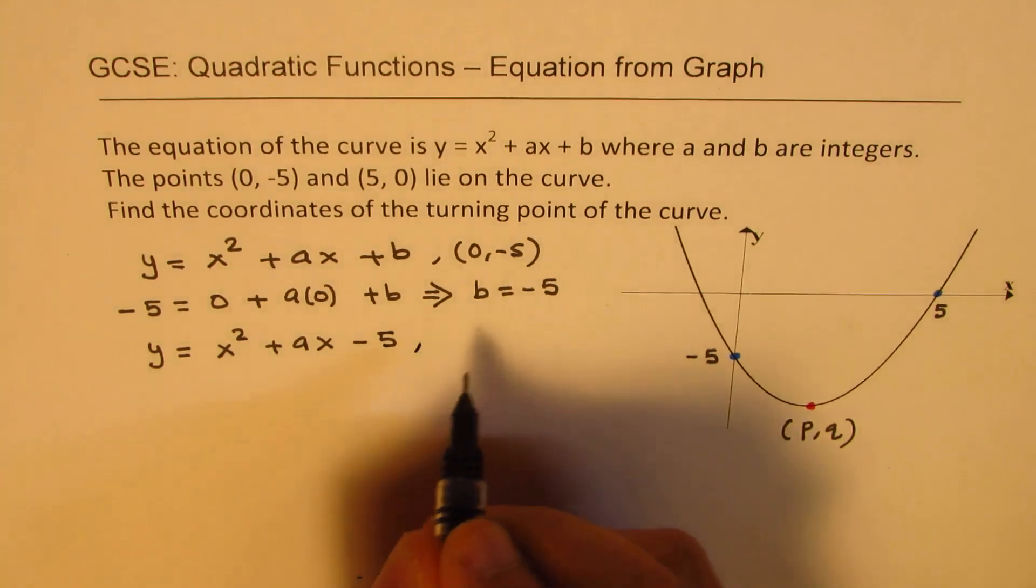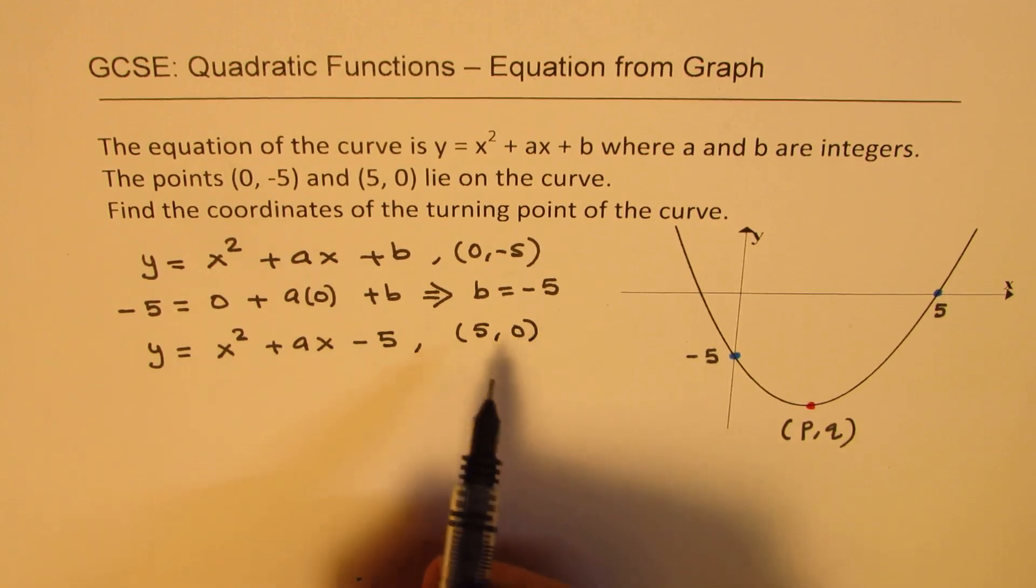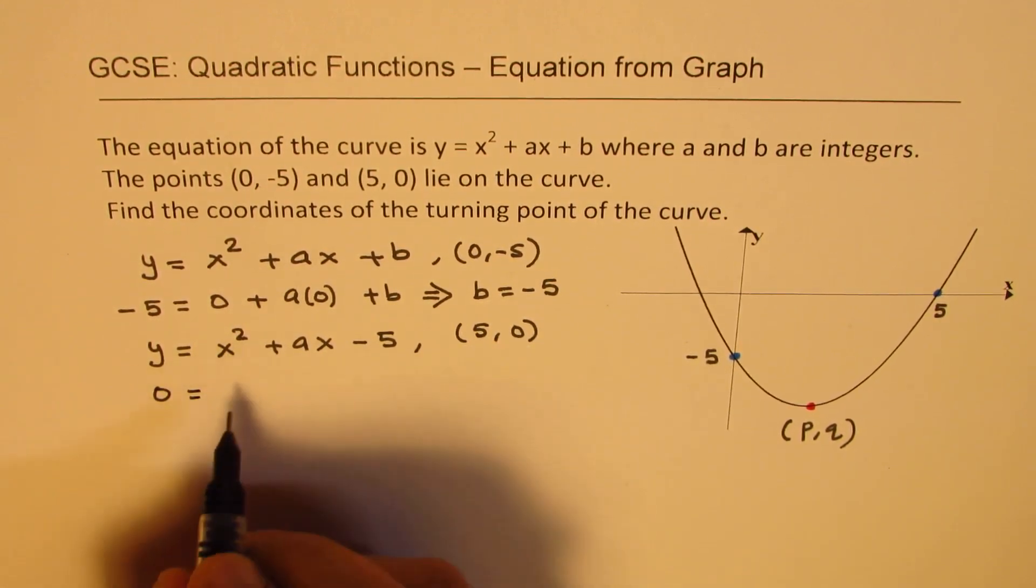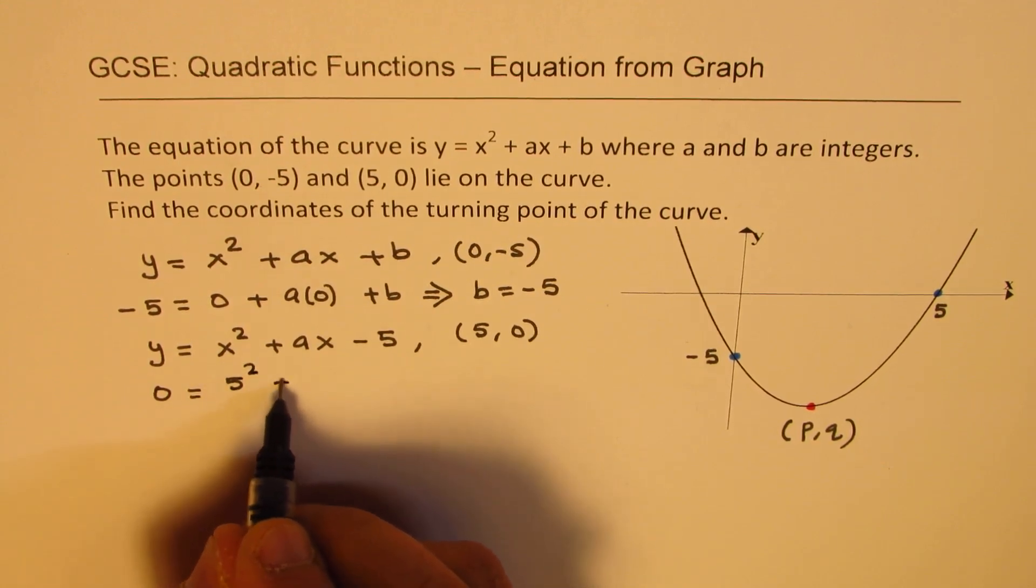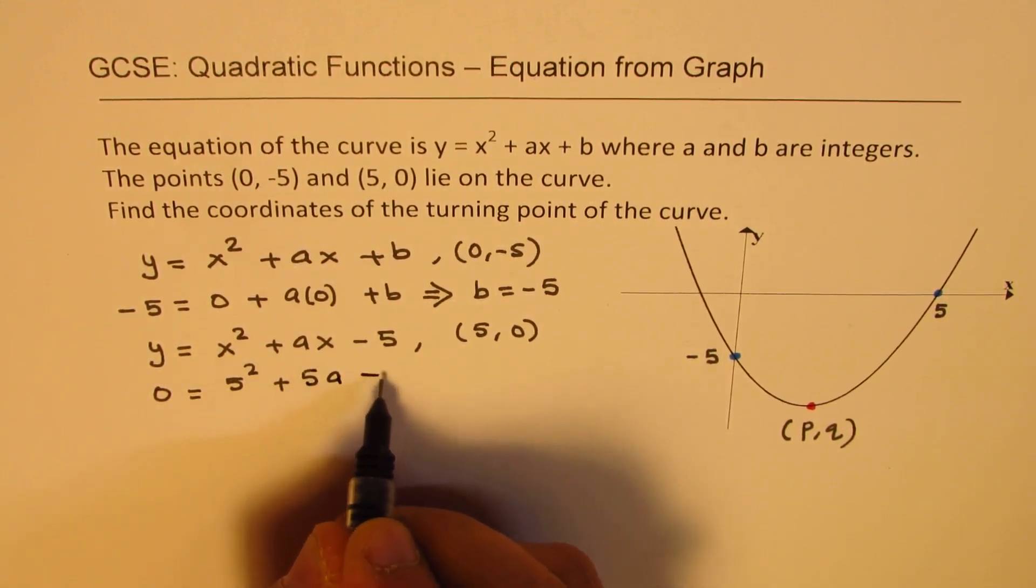Now here we'll substitute the second point, which is (5, 0). So (5, 0) means y value is 0 this time and x value is 5. So we get 5 squared plus 5 times a minus 5.